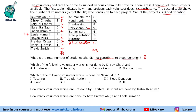All others will contribute to park cleanup. Bikram Ahuja contributed to only two projects — one will be food bank and the second will be park cleanup. For fundraising, it has 8 people contributing, so Bikram Ahuja and Leela Kumari cannot contribute to it. The lowest contributor is Harshita Gaur with 3 projects, so Harshita will contribute to park cleanup and fundraising.